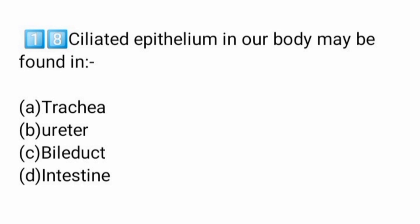Ciliated epithelium is found in the trachea, bronchi of lungs, parts of nasal cavities, uterus and oviduct of females, and vas deferens and epididymis. The ureter does not have ciliated epithelium.